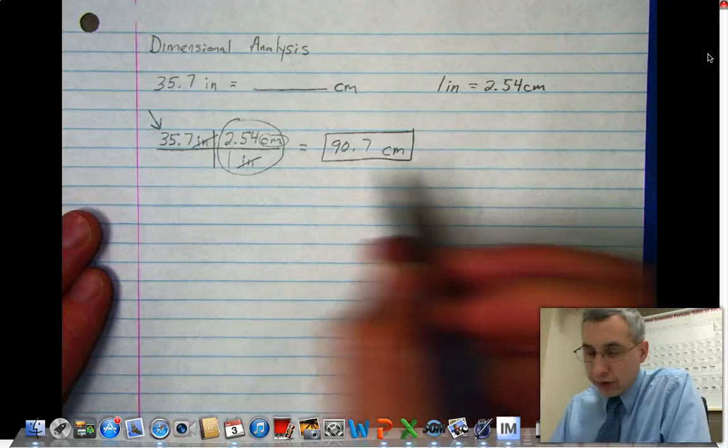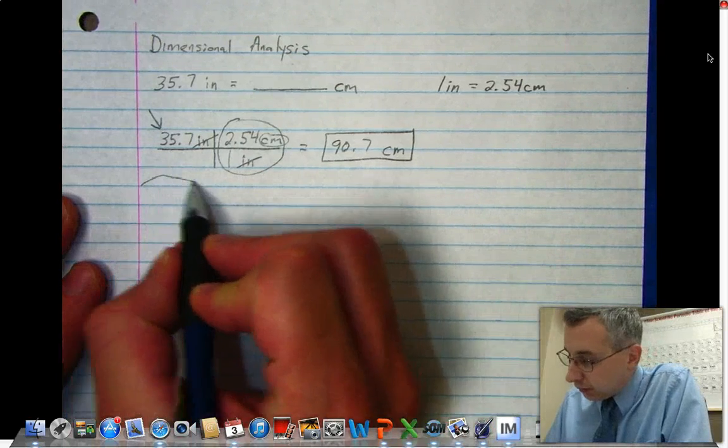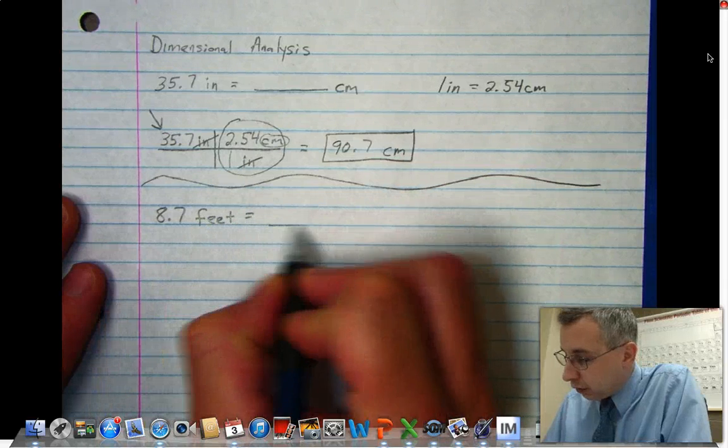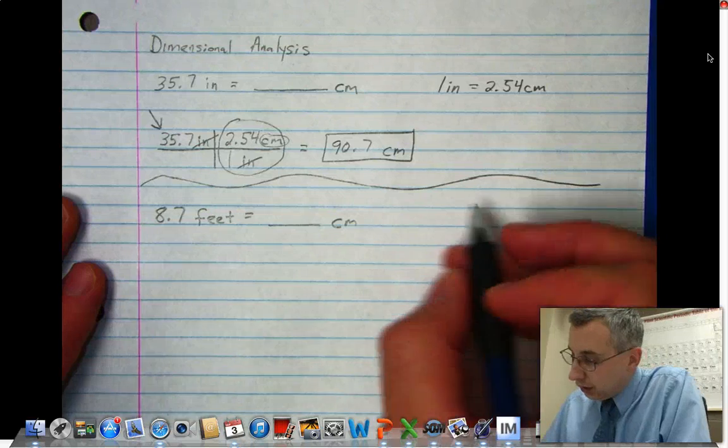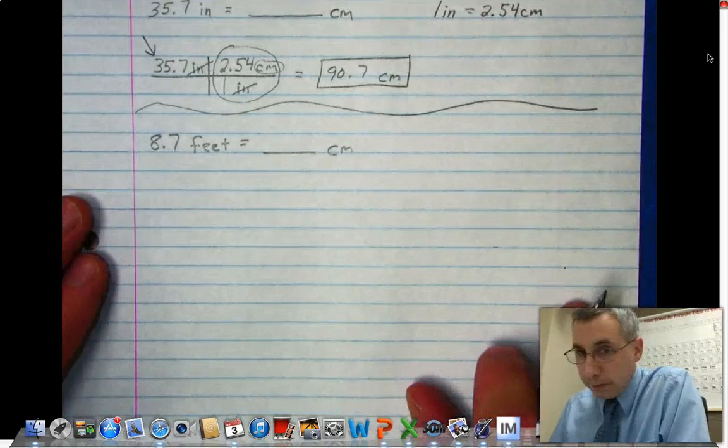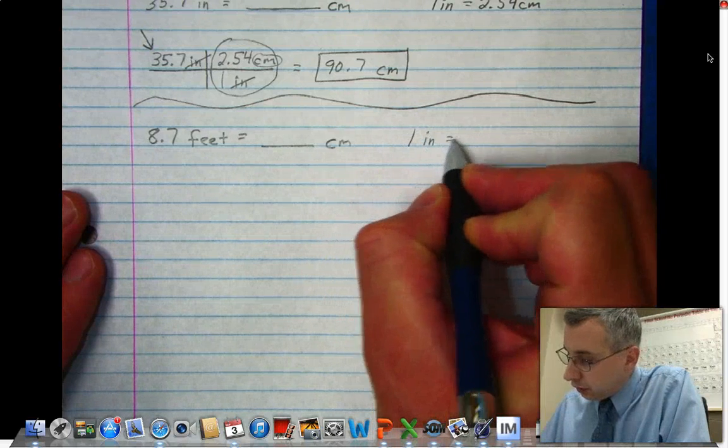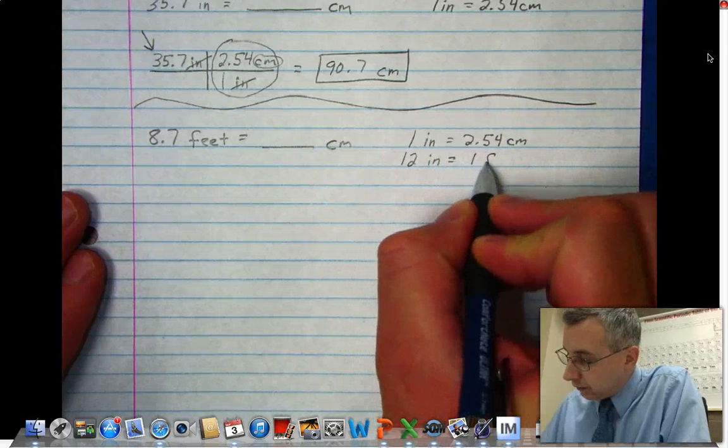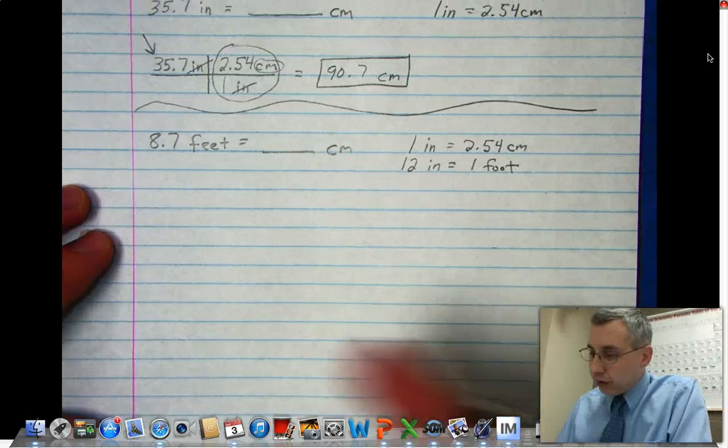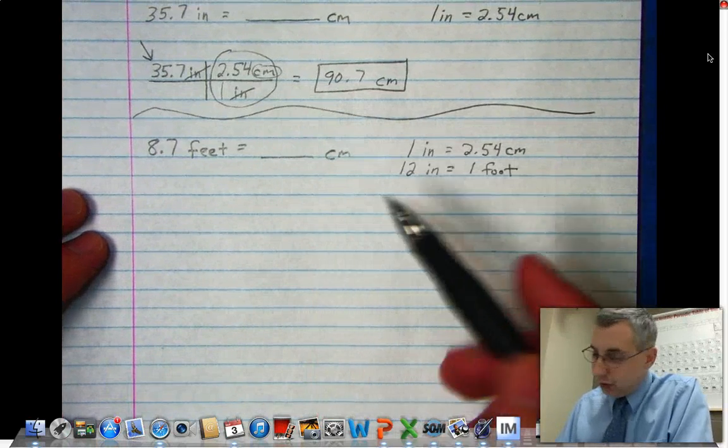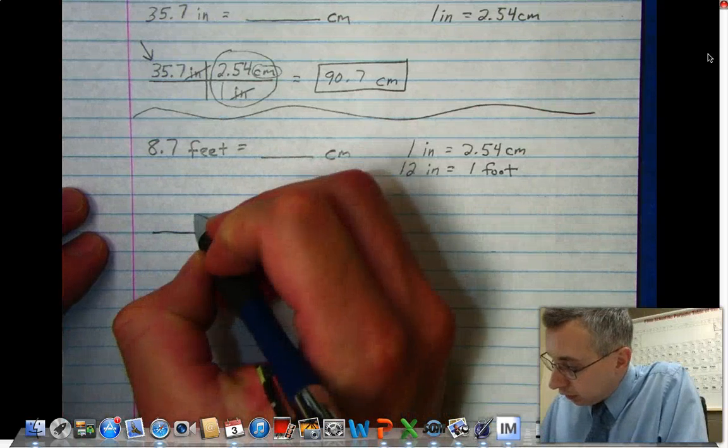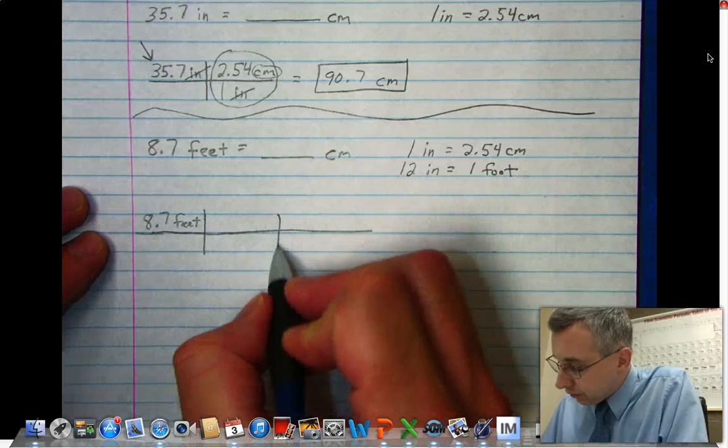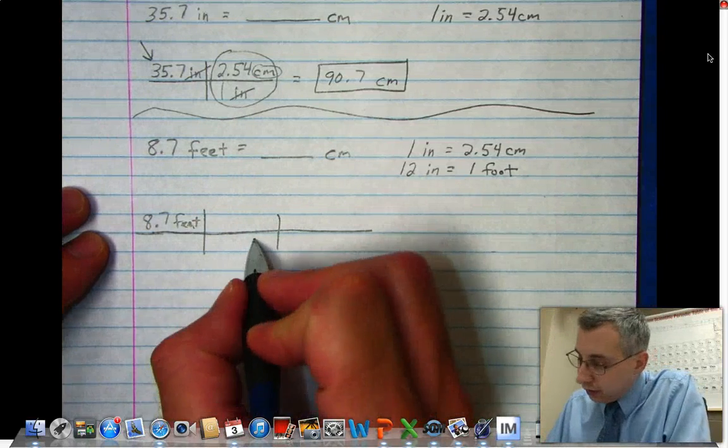Let's do one that's a little bit more advanced. Something is 8.7 feet, that's equal to some number of centimeters. I'm going to give you two equivalent statements: one inch is 2.54 centimeters and 12 inches is one foot. So it's going to be a two-step chart. The first part of the chart is what I know: 8.7 feet. Since there's feet here, you have to have a unit of feet down here.